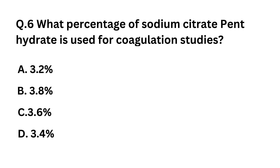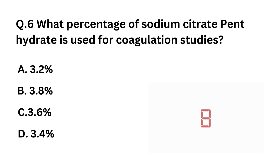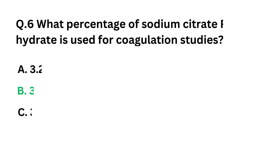Question 6: What percentage of sodium citrate pentahydrate is used for coagulation studies? Option A: 3.2%. Option B: 3.8%. Option C: 3.6%. Option D: 3.4%. The correct answer is Option B: 3.8%.